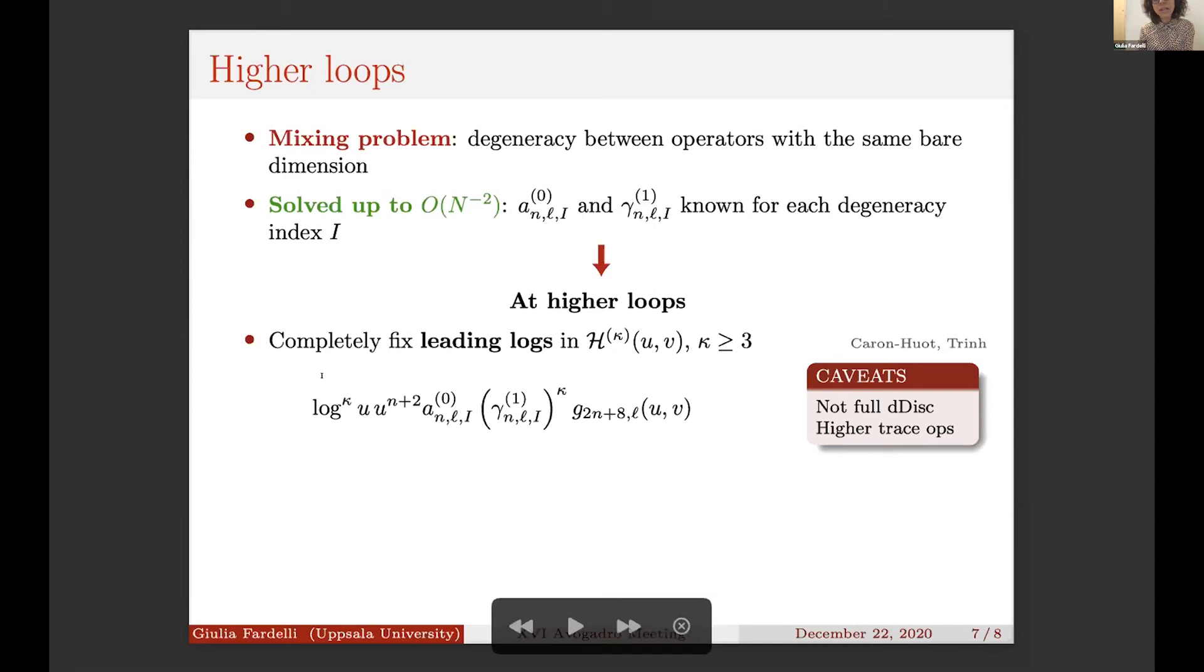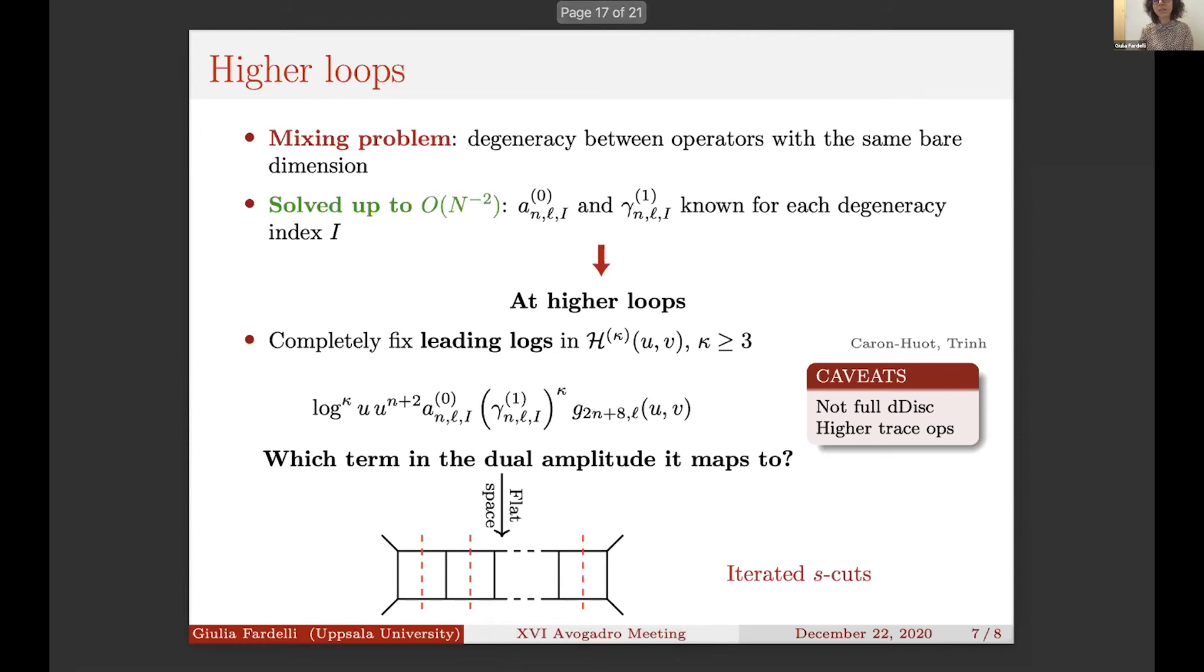Unfortunately, this term is not enough to fully reconstruct the double discontinuity and so to fix the correlator, but still it tells us something. One thing that one has to be careful of is that also higher-trace operators will start contributing at higher order. But still, one can ask which term in the dual amplitude these leading logs map to, and the answer that we had is that in the flat space limit, this quantity is exactly dual to iterated cuts.